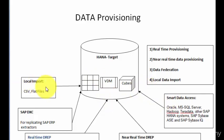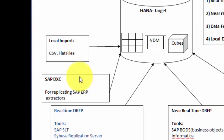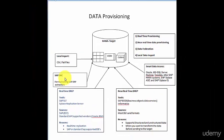Next is local data import. Many business users still use CSV and flat files, so HANA has a built-in local import capability to bring in CSV and flat files. SAP DXC is designed specifically to interact with the extractors of the SAP ERP system. When you want to bring that data into the HANA database, you would use SAP DXC. DXC also provides other solutions, which we will cover when discussing DXC in detail.